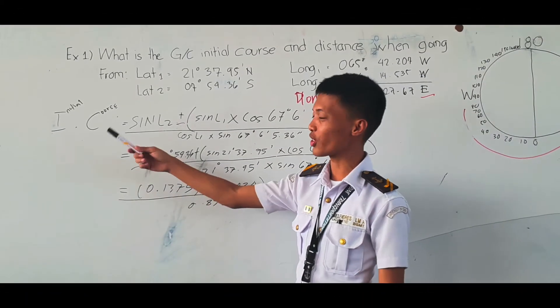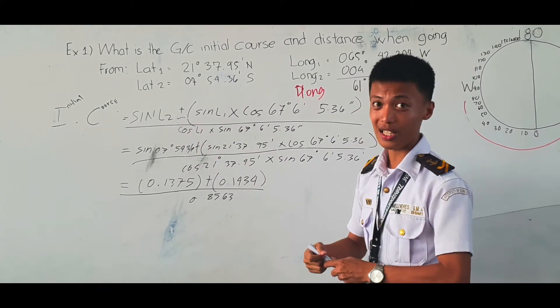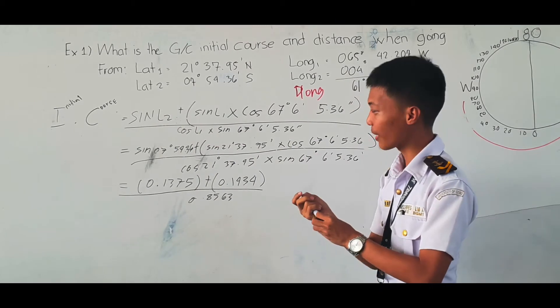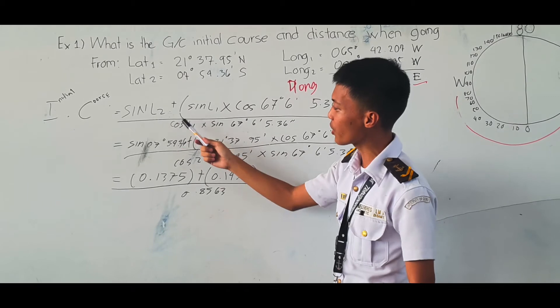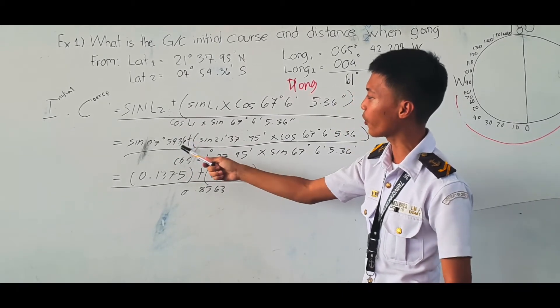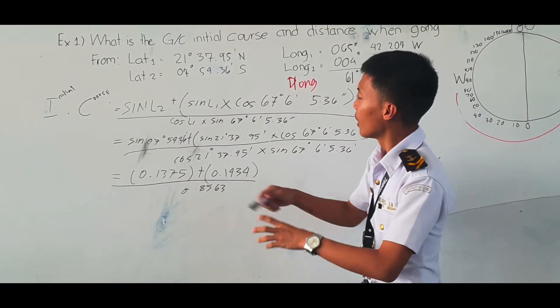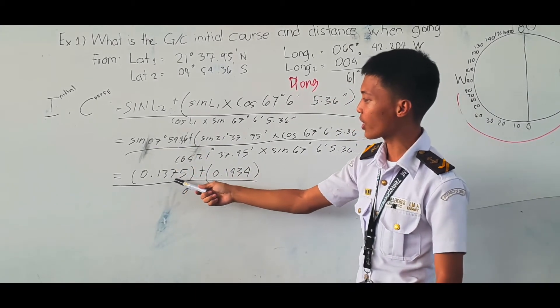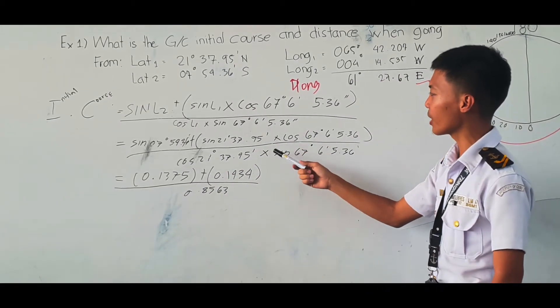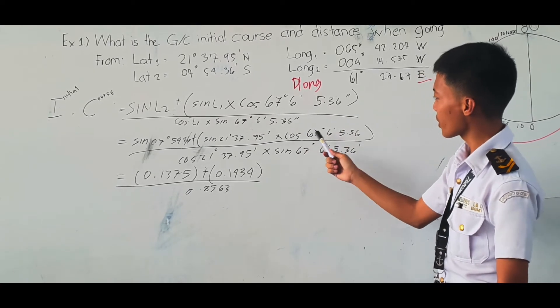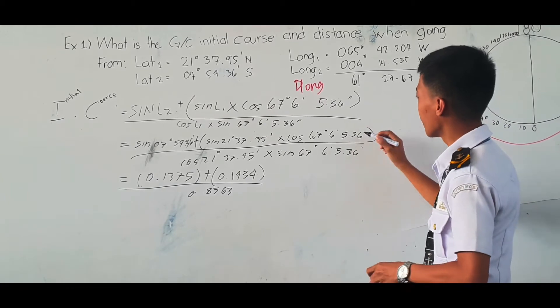I am here again to discuss the initial course. Same sign minus, unlike sign plus. In this situation, we have unlike sign. So sin L2 substituted is 07 degrees 54.36 minutes, and the answer is 0.3875. And sin 21 degrees 37.95 minutes times cos 67 degrees 6 minutes 5.36 seconds. This is the distance. You need to multiply this to get the answer.